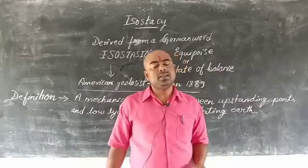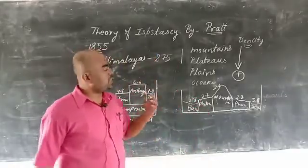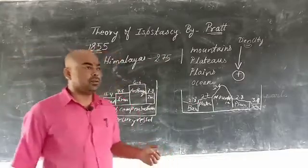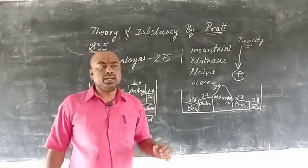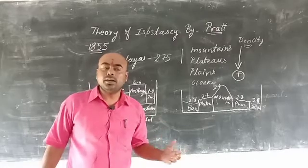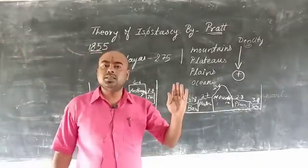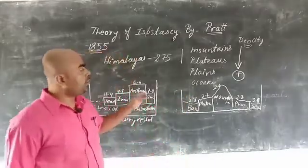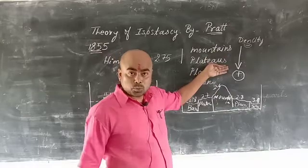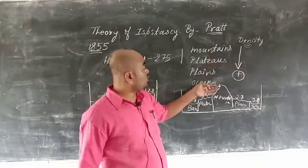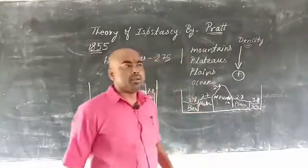Now we move on to the theories of isostasy. Pratt's theory: Pratt developed this theory in the year 1855 after studying the gravitational pull of the Himalayas. According to him, the higher the place is, the lower the density is. So mountains have the lowest density, then plateaus, then plains, and the ocean floor has the highest density because it is lowest in height.